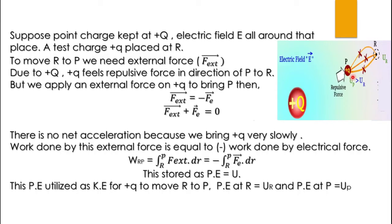F external plus Fe is equal to zero — there is no net acceleration, because we bring plus q very slowly. If we bring it fast, it would be an accelerated motion, but since we bring it slowly, there is no acceleration. Therefore, there is no net acceleration because we bring plus q very slowly.